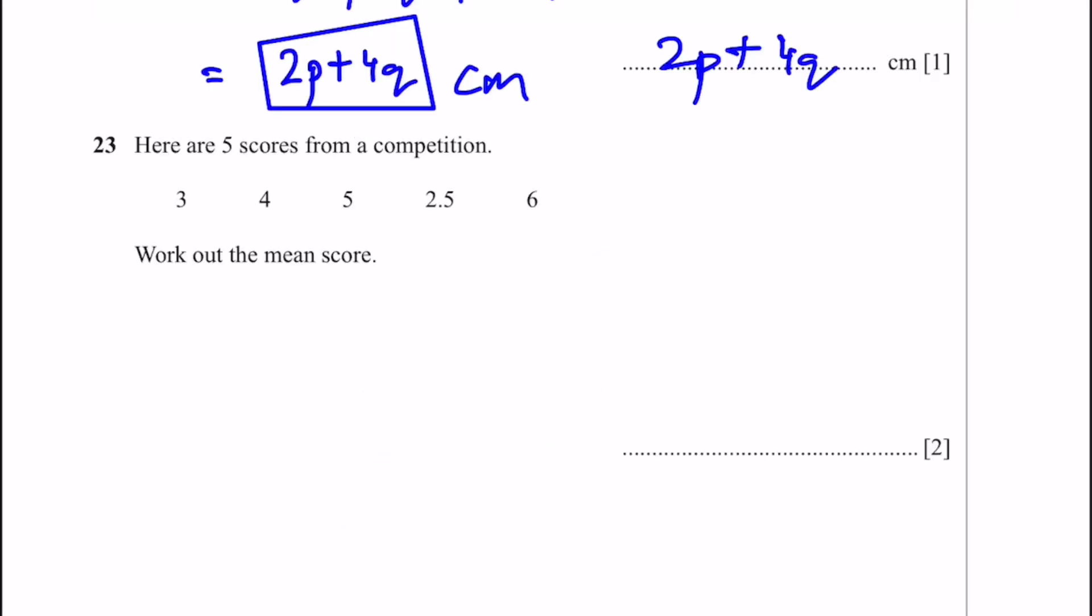Question 23. Here are 5 scores from a competition: 3, 4, 5, 2.5, and 6. Work out the mean score. We can add these up and divide by the number of terms, which is 5. When we do that, we get 20.5 divided by 5, and that's equal to 4.1. That's the answer.